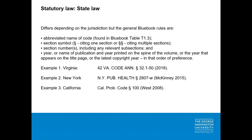Our example number one is for Virginia, which organizes their statutes by title. A full citation to section 32 of title 42 in the 2018 edition of the Code of Virginia Annotated would be this. Our example number two is for New York, which organizes its code by subject matter. A full citation to section 100 of California's Probate Code in the 2008 edition of West's Annotated California Codes would be this. Our third example is for California, which also organizes its statutes by subject matter, so a full citation to section 100 of California's Probate Code in the 2008 edition of West's Annotated California Codes would be this.